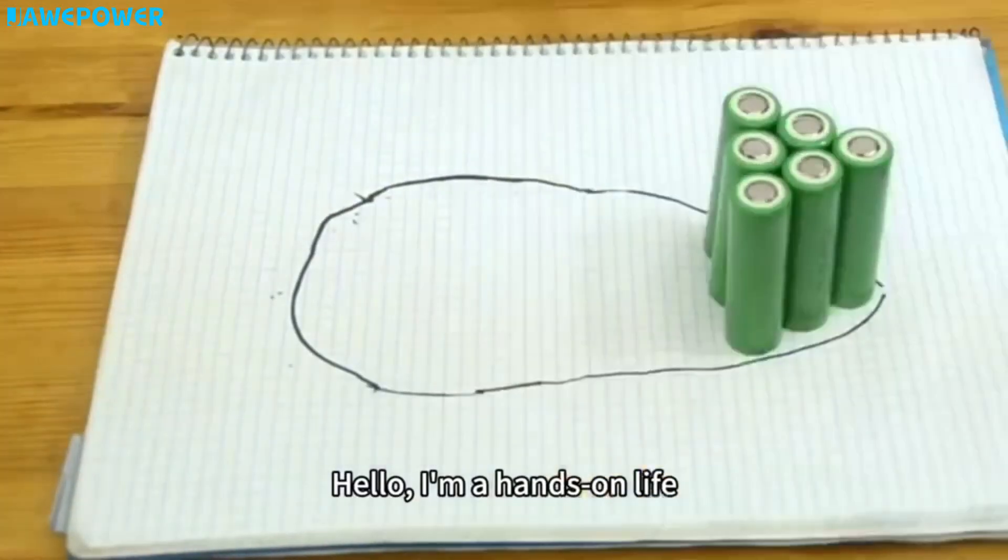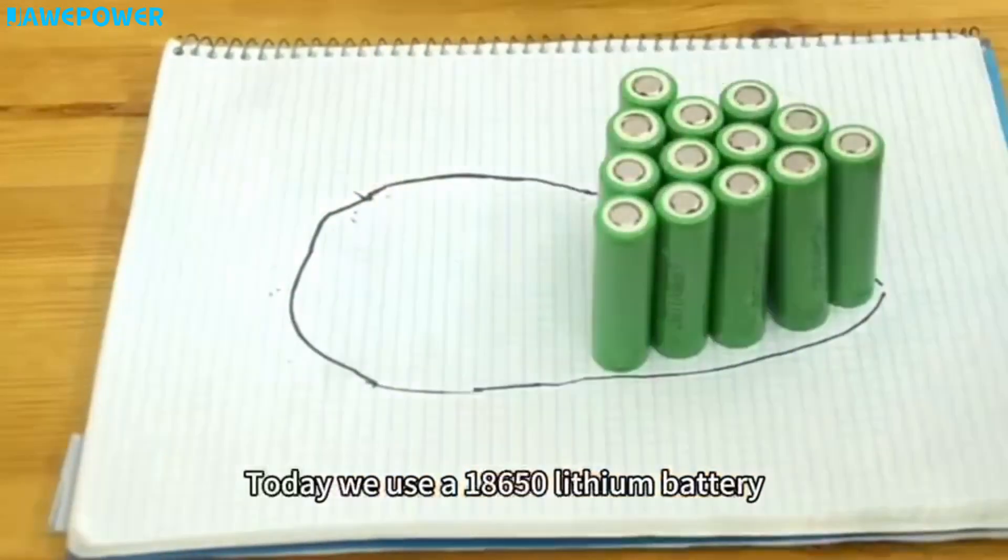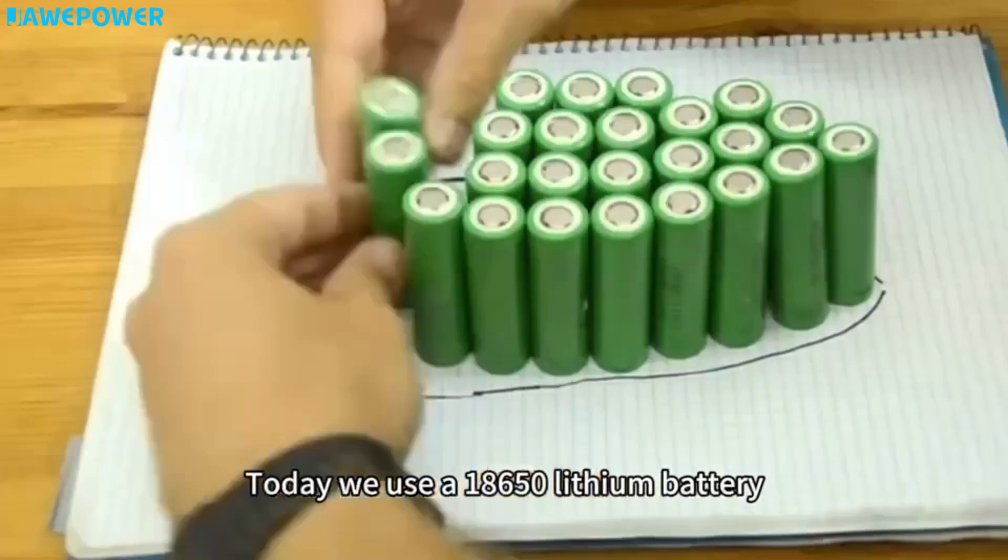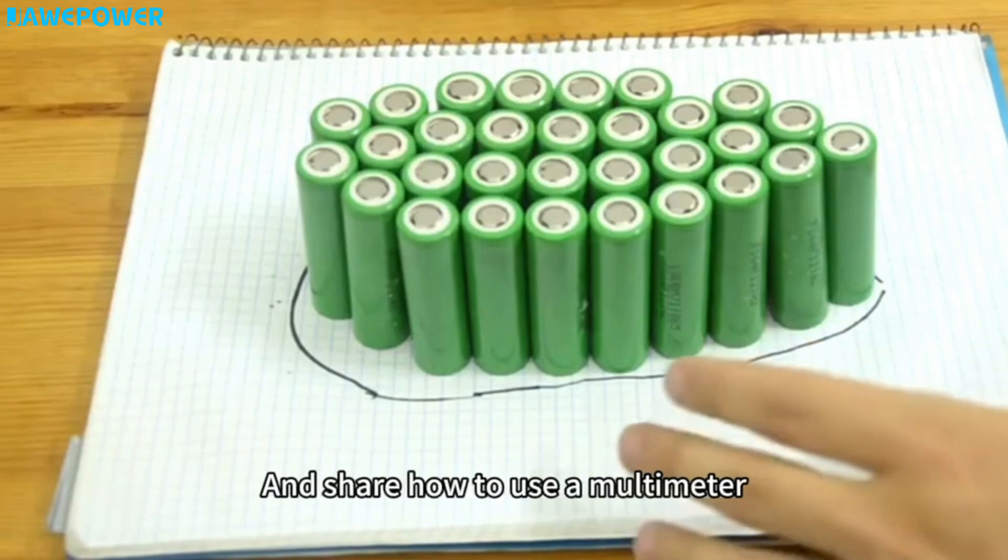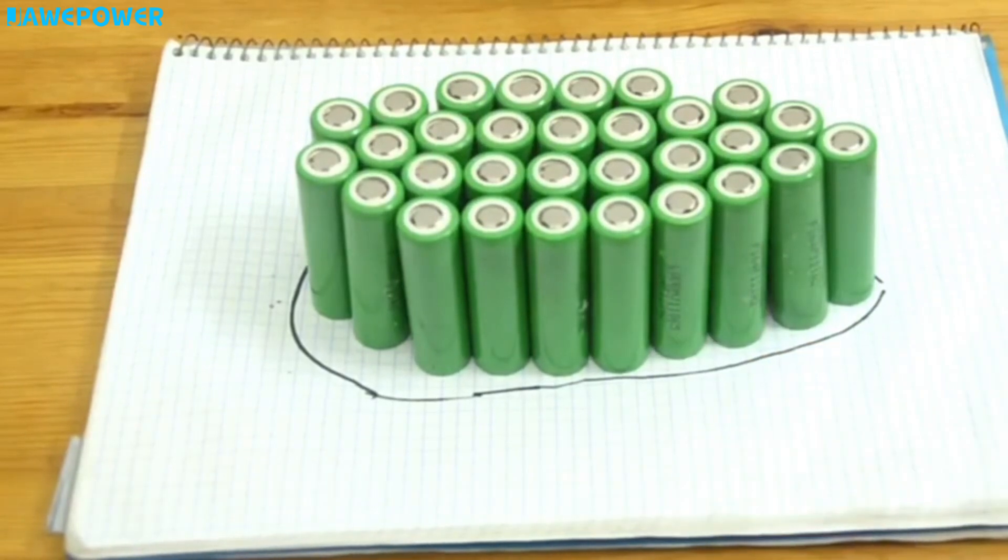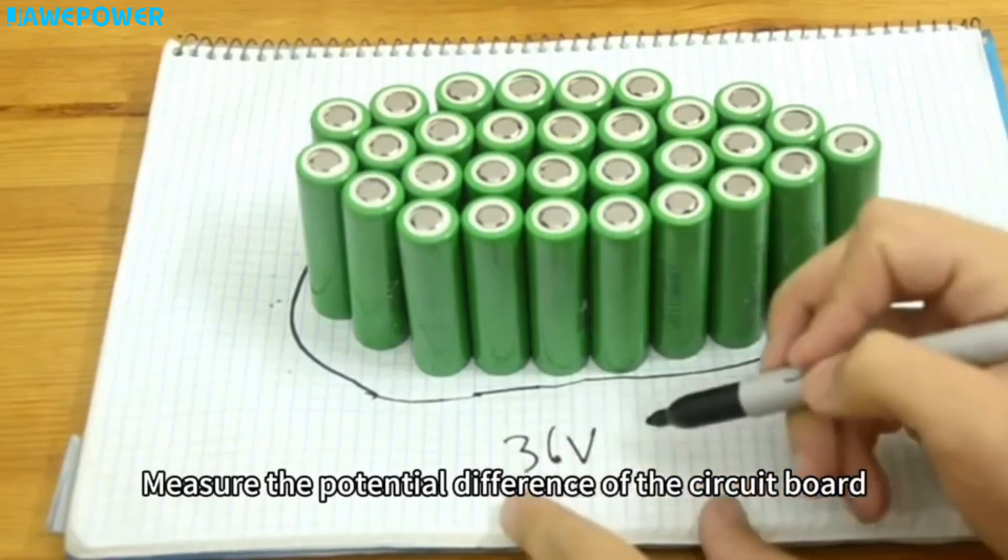Hello, I'm Hands-On Live. Today we use 18650 lithium batteries to make a simple circuit and share how to use a multimeter to measure the potential difference of the circuit board.